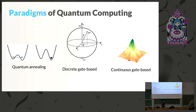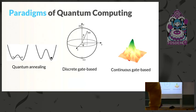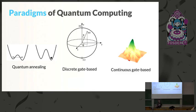Now I'm going to jump into different paradigms of quantum computing and how the field divides. There are three major areas: quantum annealing, discrete gate-based quantum computing, and continuous gate-based quantum computing, and I'll go into each of these individually.